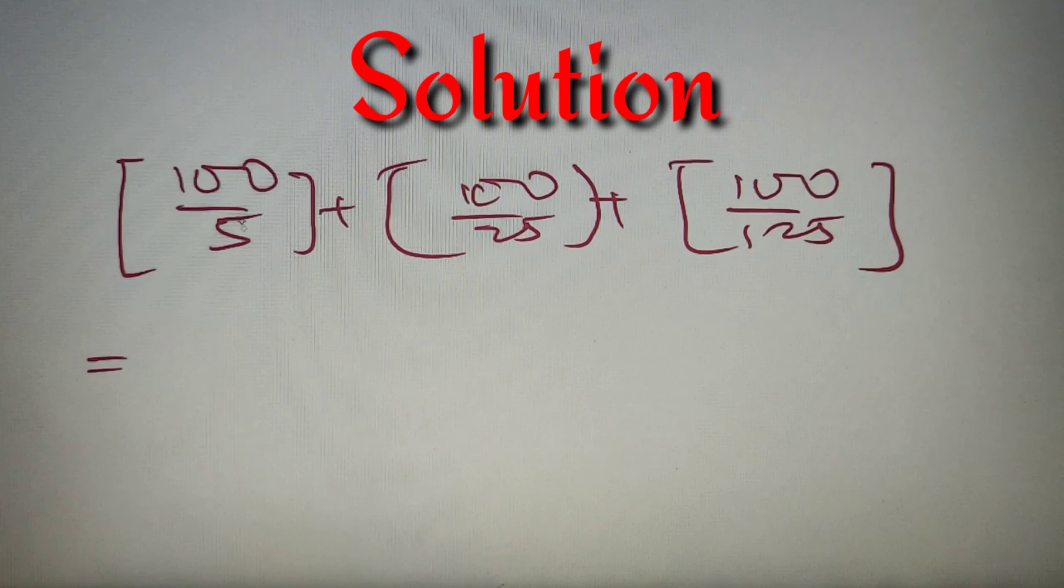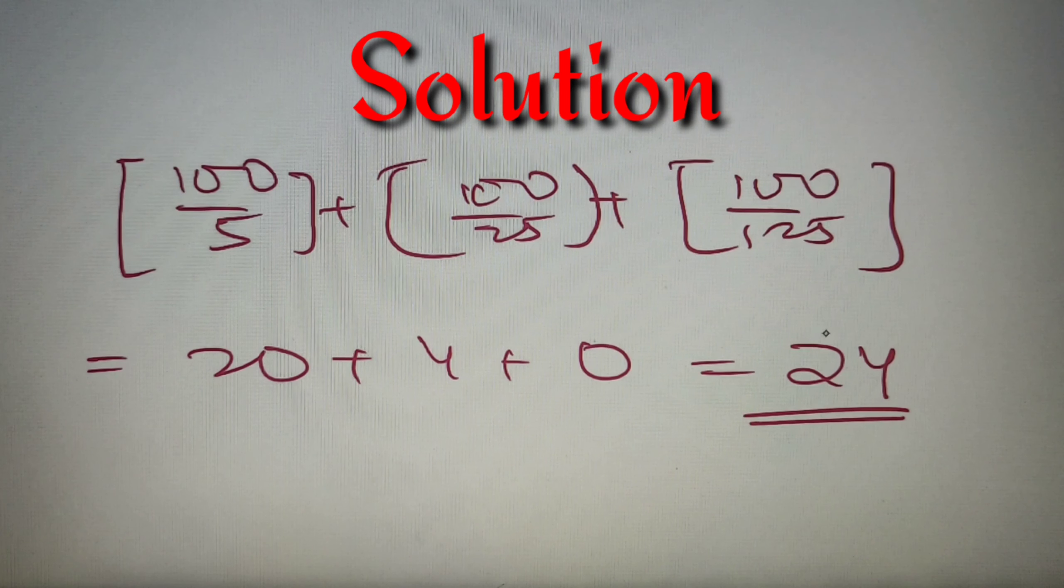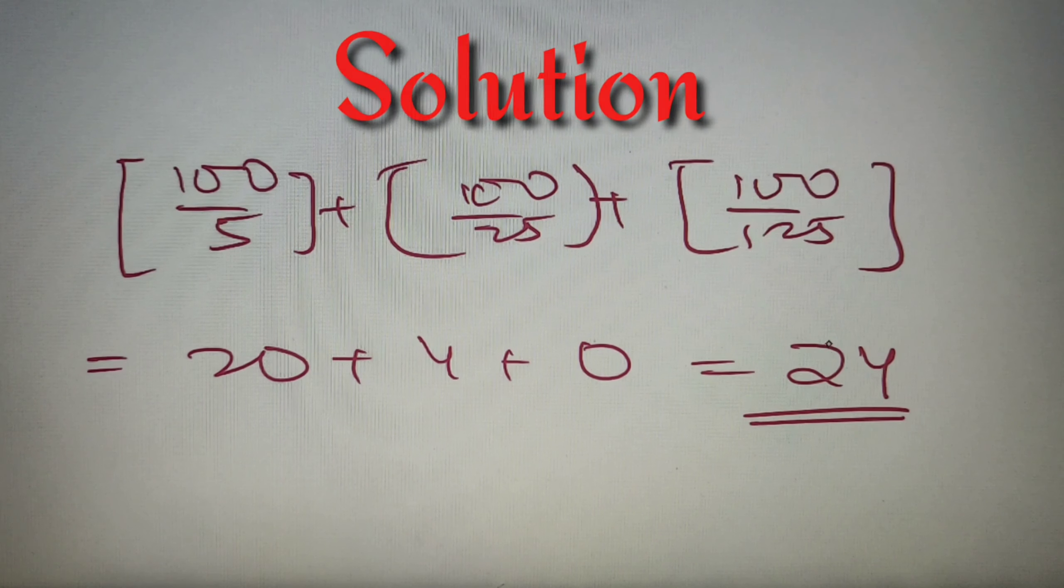The greatest integer value of 100 by 5 is equal to 20. The greatest integer value of 100 by 25 is equal to 4, and the greatest integer value of 100 by 125 is equal to 0. So basically, our answer is equal to 20 plus 4, which is equal to 24. The number of zeros in which the product of the first hundred positive integers ends is equal to 24.